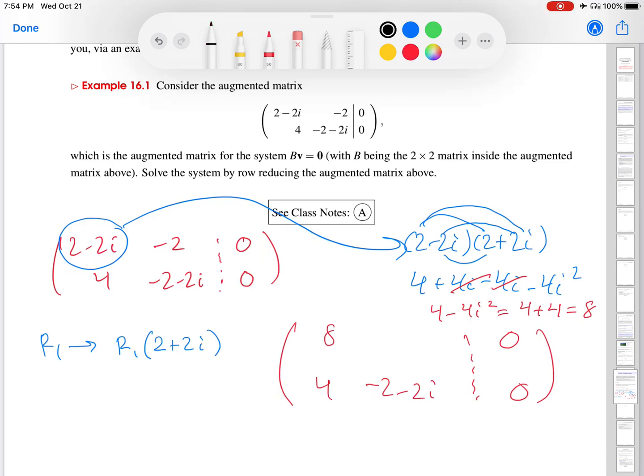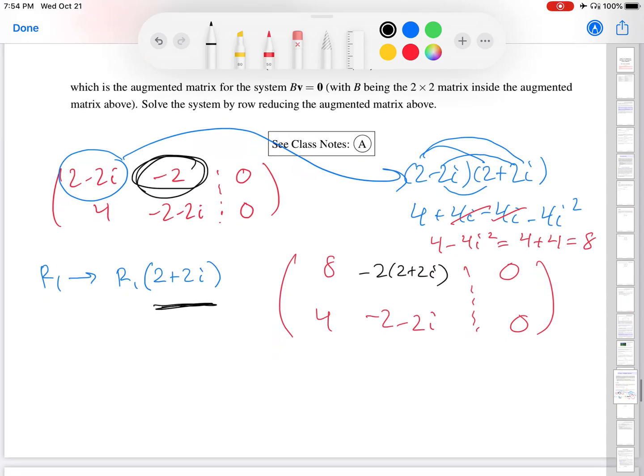And then when I multiply this 2 plus 2i times this negative 2 up here, I'm going to get negative 2 times 2 plus 2i. And then let's continue simplifying here. I get 8 minus 4 minus 4i. Actually, before I do that, to save a little bit of space here, notice that this has a 2 and this also has a 2. So I'm going to, as my second row operation here, divide the first row by 2.